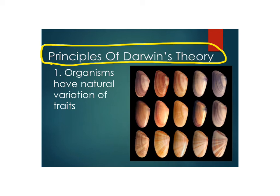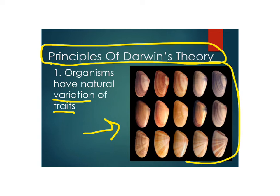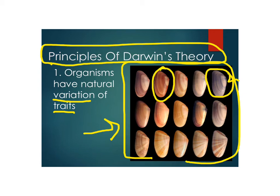The first principle is that organisms have natural variation of traits. Naturally, people are a little bit different from each other — animals are a little bit different, plants are a little bit different, and none are exactly alike. Here's an example: this is a particular species of snail, and it can come in a whole range of colors — bluish, reddish, different striping patterns — but these are all the same species. This is natural variation of traits, and it's true in all kinds of organisms.